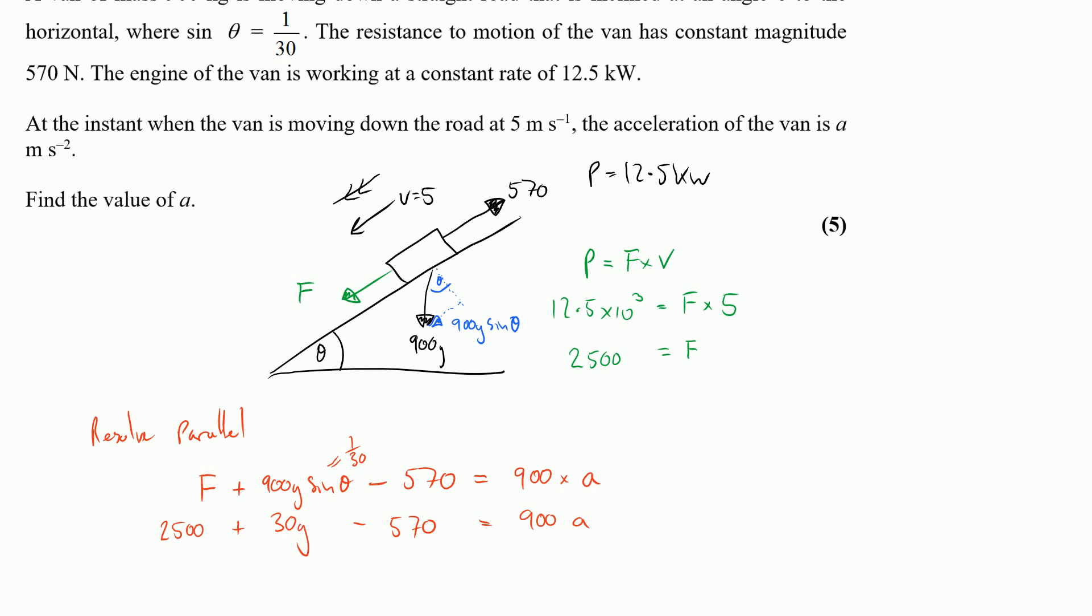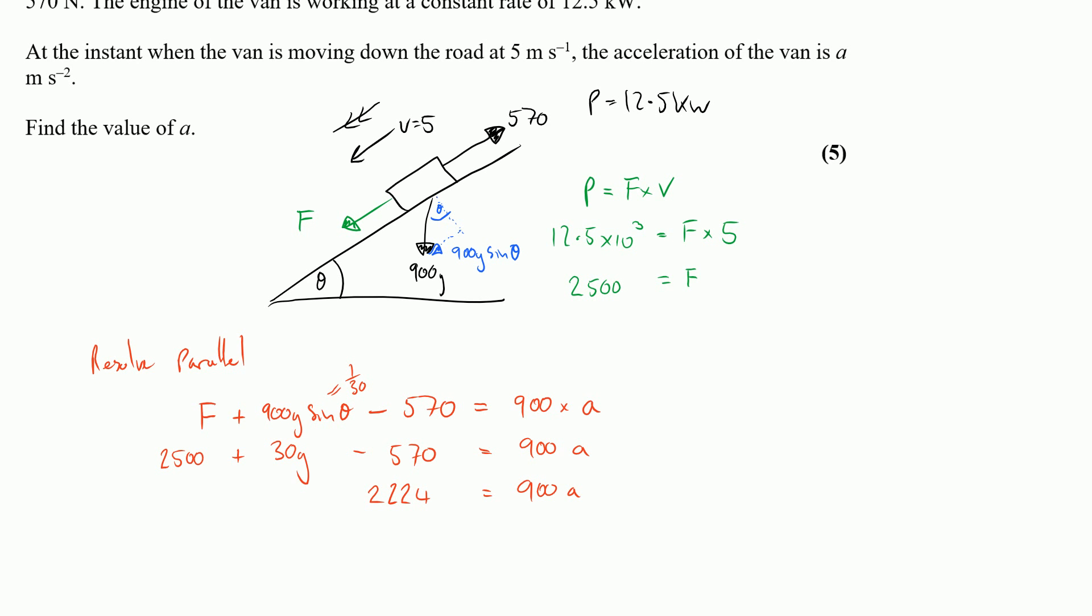And tidying this up we get 2,224 is equal to 900 A. And dividing by 900 to 3 significant figures is 2.47 as our acceleration.